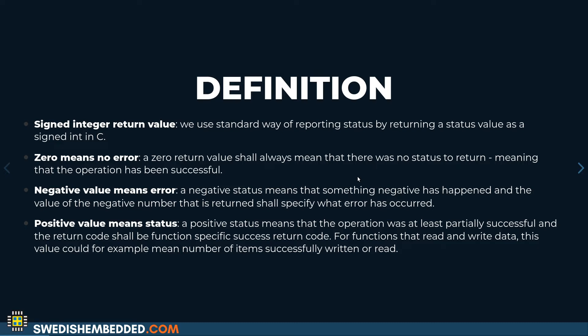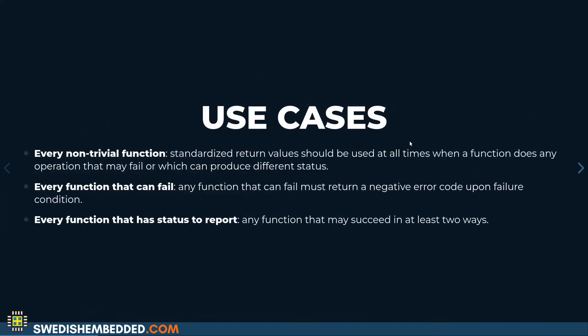A positive value means that the operation was successful but there is additional information to report about the success — for example, to indicate a partial read or partial write if it's a read or write operation. If you have a very trivial function that, for example, just assigns a value, that function is by definition always going to succeed, so we don't need to report any status and we make that function void.